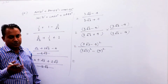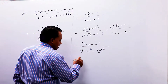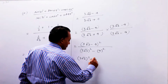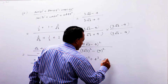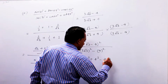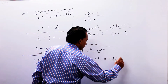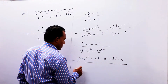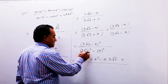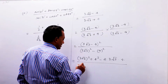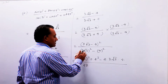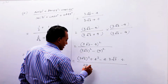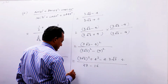यहाँ बच्चों a minus b का square लगाएंगे जो formula है: a² + b² minus 2ab। तो यह लिख पाएंगे: (3√3)² + 4² minus 2 × 3√3 × 4। नीचे बच्चों इसका square होगा — 3 का square nine, √3 का square 3, तो 9×3 = 27 minus 4² = 16।